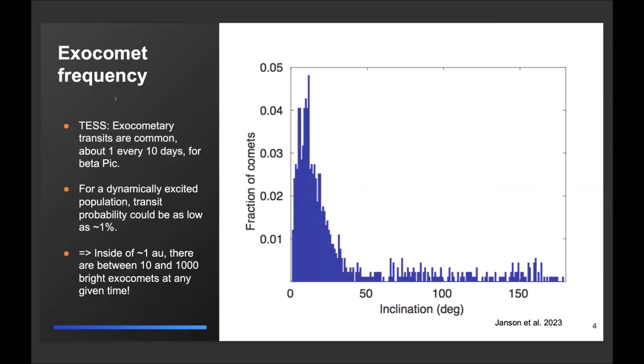Now, so TESS can actually see lots of these events. In fact, when TESS has been staring at Beta Pic, it's found approximately one such cometary transit every 10 days. And in fact, all of these transit events come from comets that have large enough effective sizes and high enough temperatures that you would expect to see them with LIFE, or most of them.